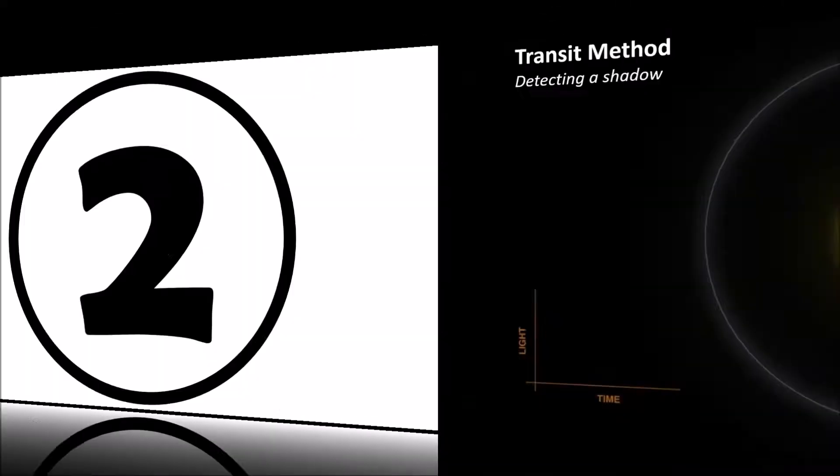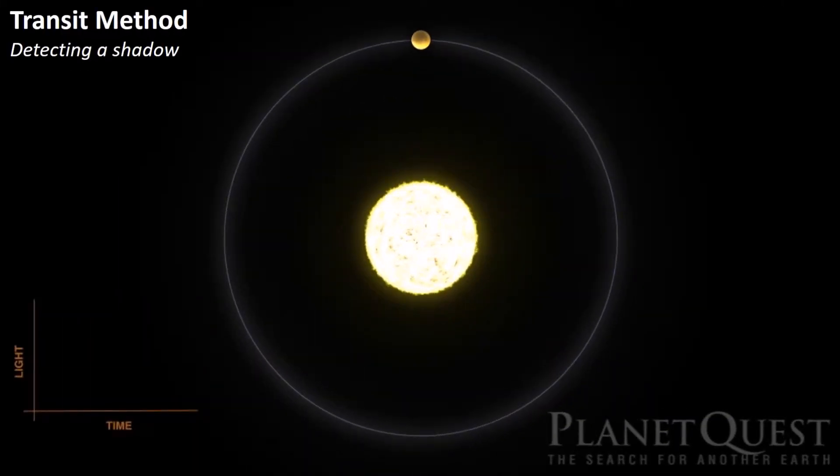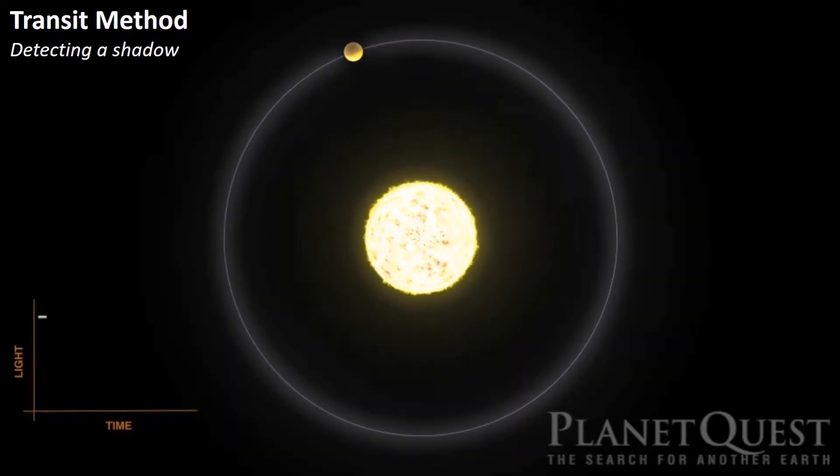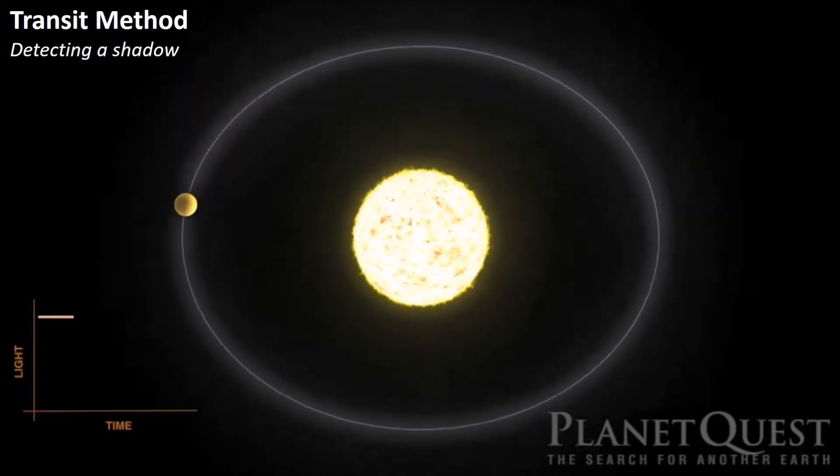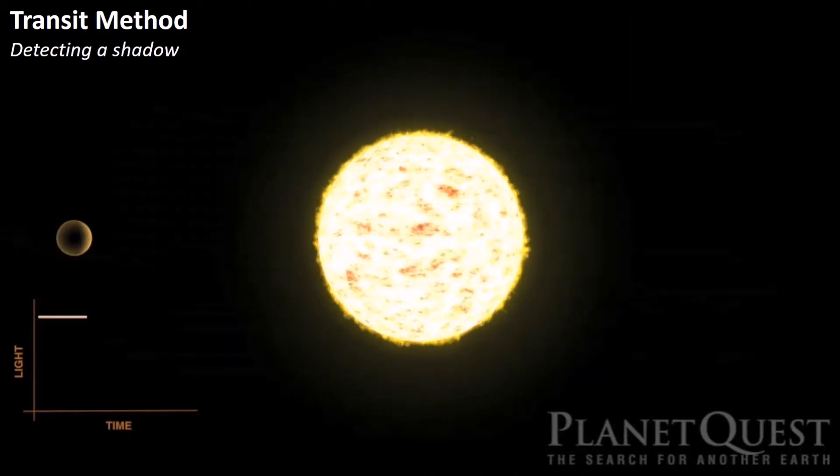Number two. Look at what you don't see. If you are lucky enough to be in the same plane as the new planet's orbit, meaning that the planet passes directly in front of its star when it's orbiting it, you can look for a shadow of the planet when it passes in front of the star.